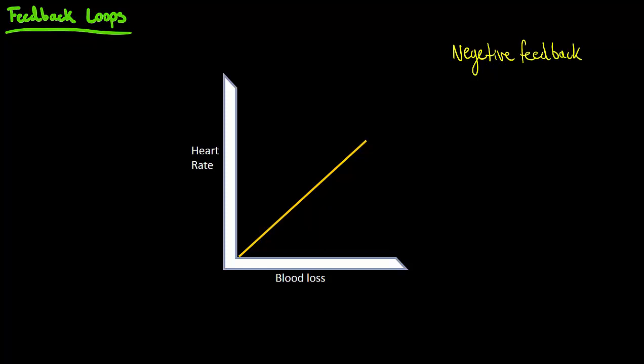Negative feedback, you should know by now, is whenever the body is trying to return a variable back to its homeostatic position. That can take a couple different forms. If you're clearly going back towards setpoint, that is negative feedback. Traveling back to setpoint.